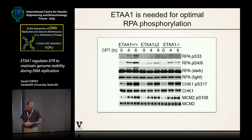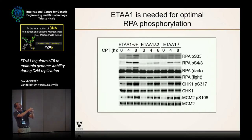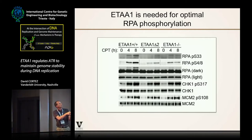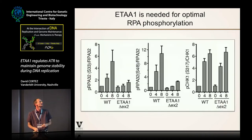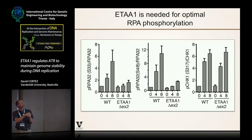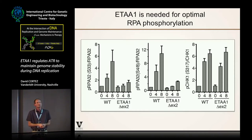The exon-2-deletion protein will still immunoprecipitate RPA because the RPA interaction motifs are encoded in other exons. Looking at signaling: treating wild-type cells, knockout cells, or exon-2-deleted cells with camptothecin for four or eight hours, and looking at RPA phosphorylation — an ATR-dependent event — one sees robust RPA phosphorylation in wild-type cells. It's blunted both by deleting ETAA1 or in the exon-2-deleted cells. Other substrates like MCM2 and CHK1 phosphorylation are much less affected.